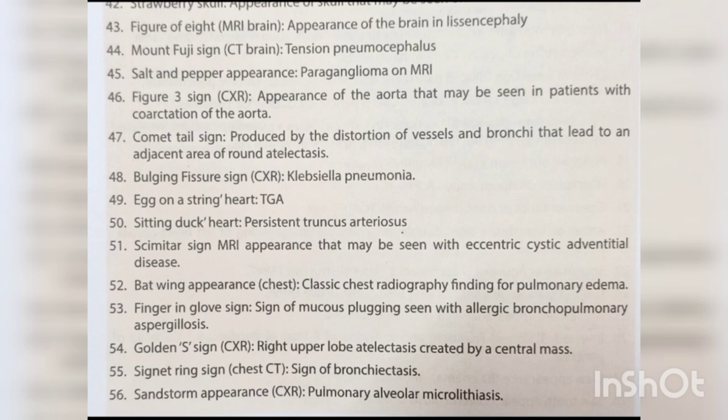Bulging fissure sign — Klebsiella pneumonia. Egg-on-string heart — TGA. Sitting duck sign — persistent truncus arteriosus. Scimitar sign — MRI appearance seen with eccentric cystic adventitial disease. Batwing appearance — classic chest radiography finding for pulmonary edema. Finger-in-glove sign — sign of mucus plugging seen with allergic bronchopulmonary aspergillosis. Golden S sign — right upper lobe atelectasis created by a central mass.